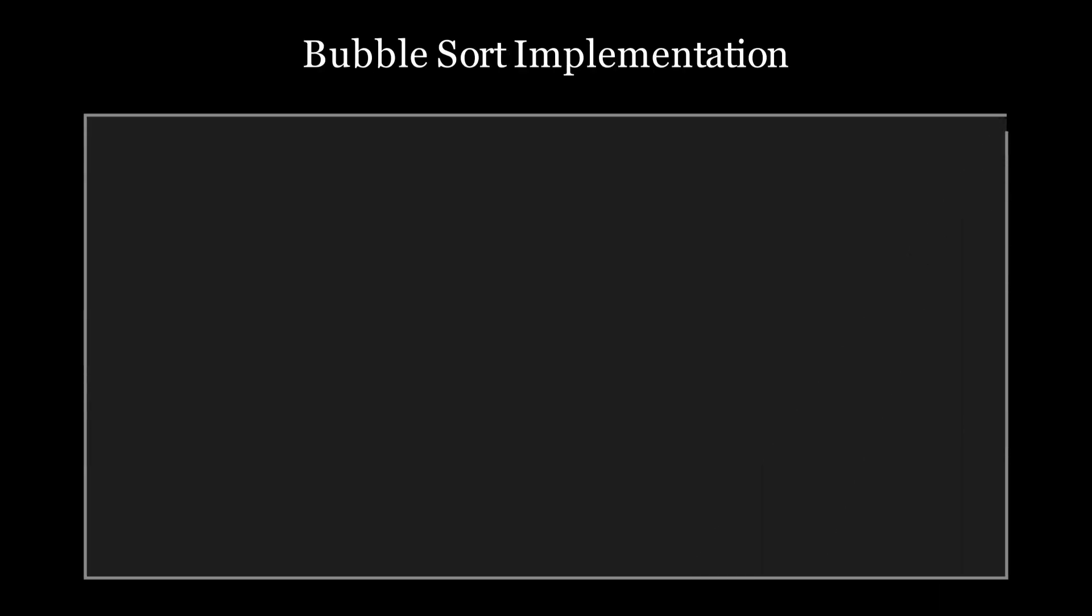Now let's take a look at the code. Here is how bubble sort is implemented in Python. First we define a function bubble_sort that takes an array as input. Then we get the length of the array using len(array).